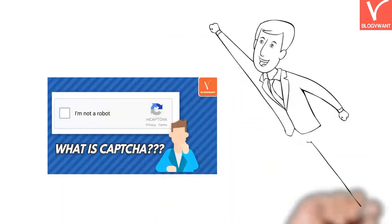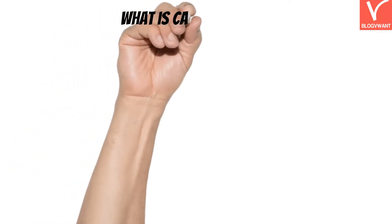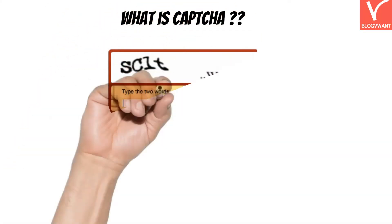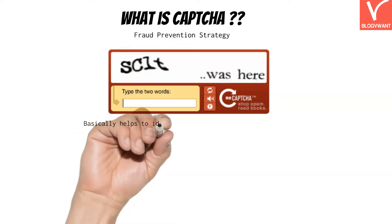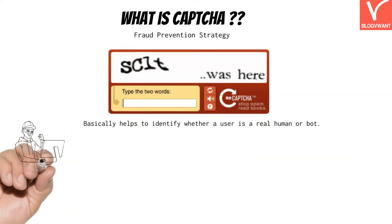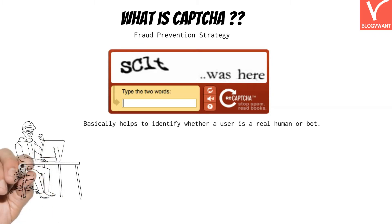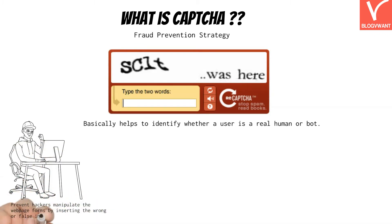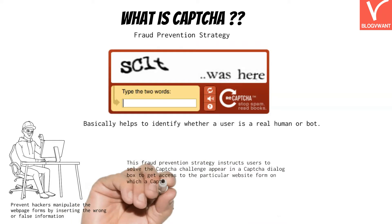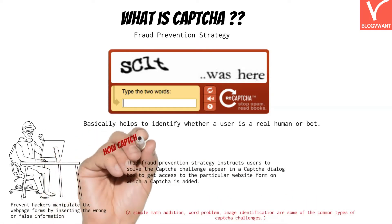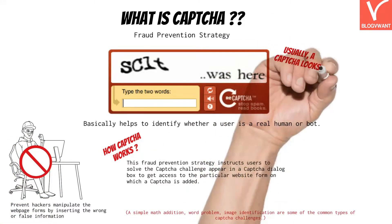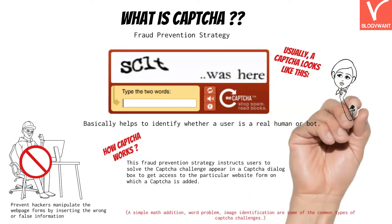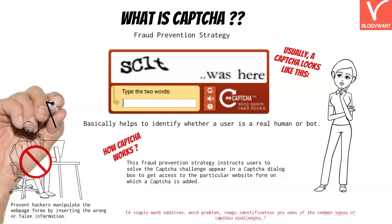Let's start with what is CAPTCHA. CAPTCHA is nothing but a simple fraud prevention strategy. Have you seen this CAPTCHA bounding box attached to website forms? This is the CAPTCHA. It basically helps to identify whether a user is a real human or a bot. As per Wikipedia, CAPTCHA was introduced in 2003 to prevent hackers from manipulating internet forms by inserting wrong or false information. This fraud prevention strategy instructs users to solve a CAPTCHA challenge in a dialog box to get access to a particular website form.